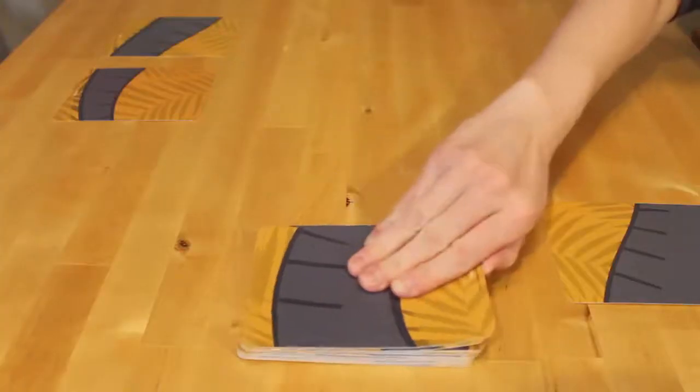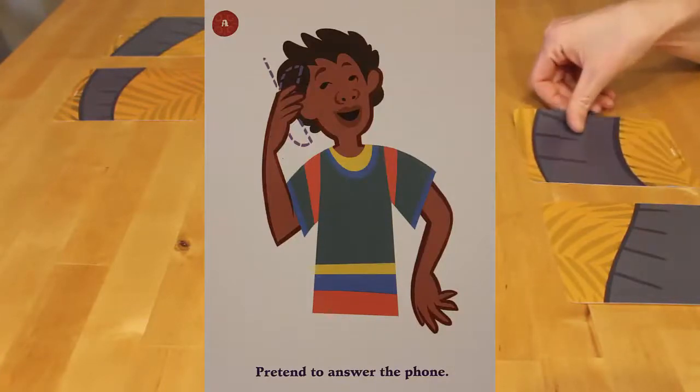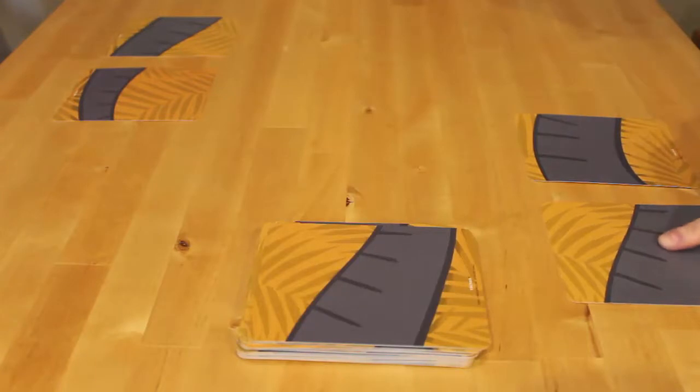The second player repeats the process. Draw a second card, read it aloud, place it face down in the second spot, perform the actions from the first card, and then perform the actions from the second card.